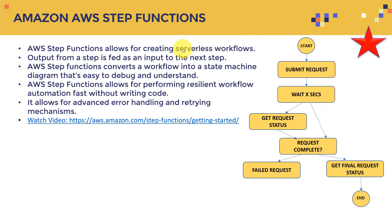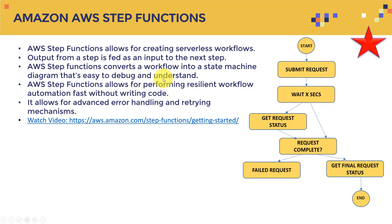For example, you can start here, then submit a request, then wait for five seconds, then decide whether to continue to 'request complete' or get the request status back. You can ask whether the request is complete or not — it might be a failed request, or you get a final request status, and then you end. The output from one step is fed as input to the next step.